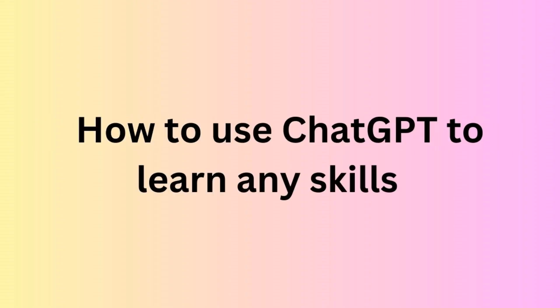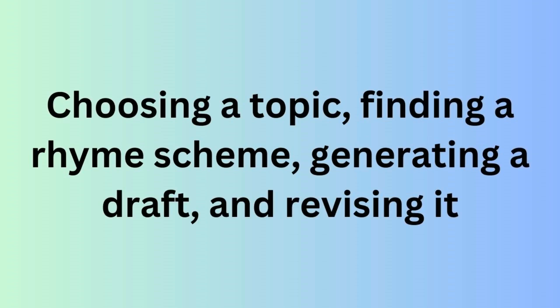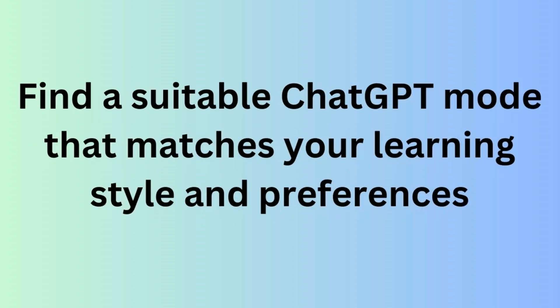How we can use ChatGPT to learn any skill. First, identify your learning goal and break it down into smaller sub-goals. For example, if you want to learn how to write a poem, you can set sub-goals such as choosing a topic, finding a rhyme scheme, generating a draft, and revisiting it.